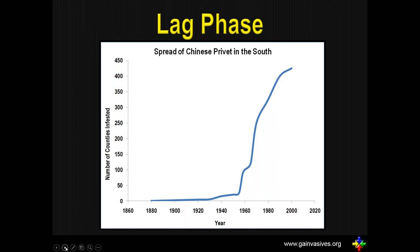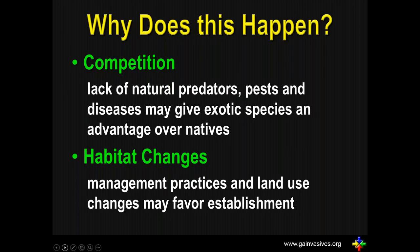In other areas — the northeastern United States, the west coast, and many areas — privet is a huge problem. So why does this happen? Lack of natural predators, pests, and diseases — those things that didn't come with them when they were brought into the country. The plants that evolved here have to deal with those things, but invasive species don't. Habitat changes, our own management practices, and land use changes can also help favor invasive species infestations.